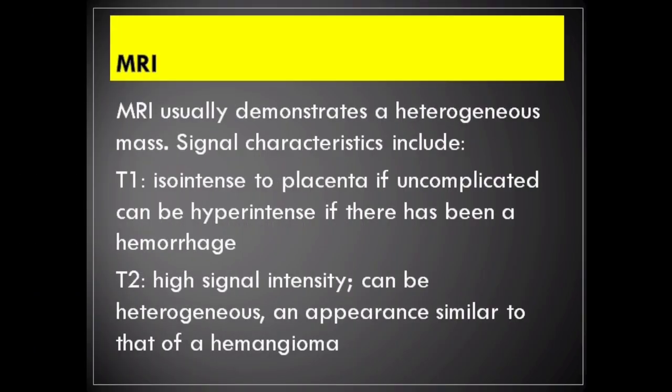On MRI, chorioangioma usually demonstrates a heterogeneous mass. On T1, it is iso-intense to the placenta if uncomplicated, but can be hyper-intense if there has been hemorrhage. On T2, it shows high signal intensity, can be heterogeneous, with an appearance similar to that of a hemangioma.